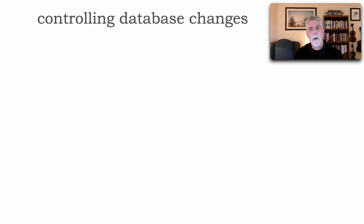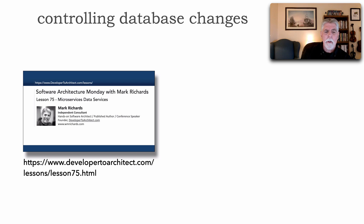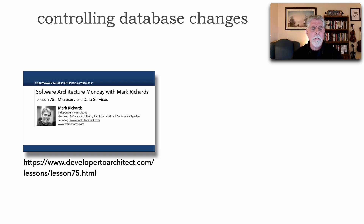In this lesson, I want to talk about controlling database change. We've already seen two lessons related to this one. The first was lesson 75, where I talked about microservices data services — a kind of microservice that acts as a DAL, a data abstraction layer, so that services needing to share data go through a single service. It helps control change because all data access is within a single specialized data service. If you haven't seen it, I'd encourage you to look at that lesson to see how it works, including the pros and cons.